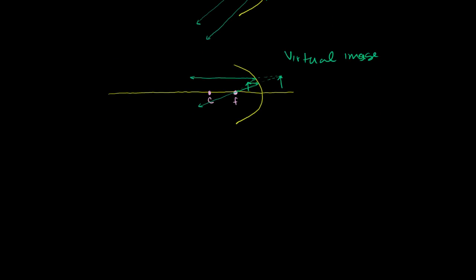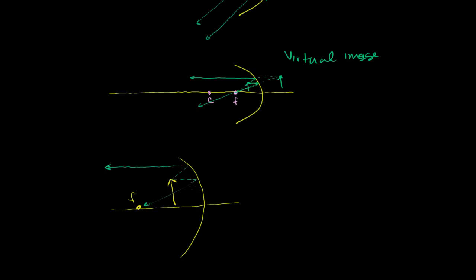Let me draw that a bit bigger to make it clearer. Here's the mirror, the focal point, and the principal axis. Draw a ray parallel — it reflects in the direction of the focal point. Something that looks like it came from the same direction as the focal point is reflected parallel to the principal axis. These two rays are diverging, but to the human eye they look like they came from a point behind the mirror — that's the virtual image. The key rules: if a ray goes through the focus, it comes out parallel; if the incident ray is parallel, it comes out through the focus.